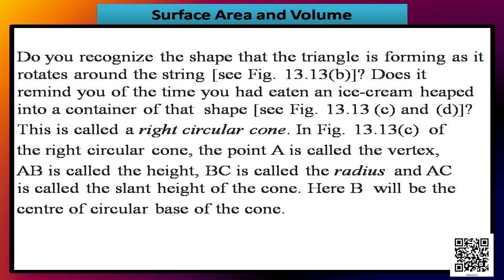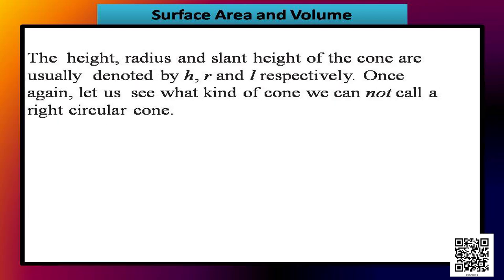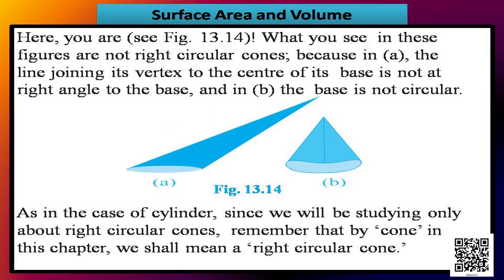In figure 13.13c, the point A is called the vertex, AB is called the height, BC is called the radius, and AC is called the slant height of the cone. B is the center of the circular base of the cone. The height, radius, and slant height of the cone are usually denoted by h, r, and l respectively.